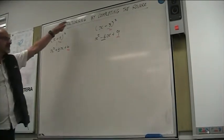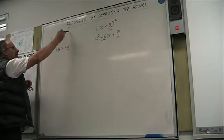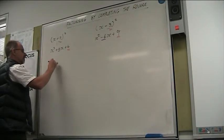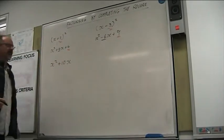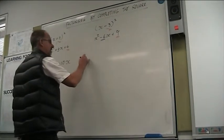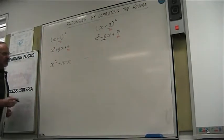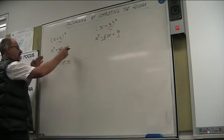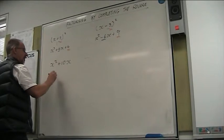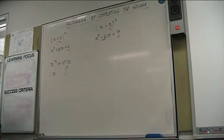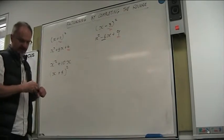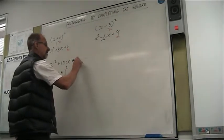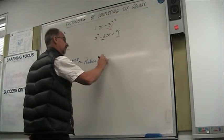So this factorising by completing the square — what we're going to do is make a perfect square. If I have something like x squared plus 10x and I wanted to make that into a perfect square, what would I need on the end? Well, what would be in that bracket? We'd have to have x plus 5. So what would I need on the end? It would be plus 25 on the end. So plus 25 now makes that a perfect square.